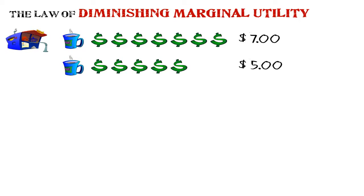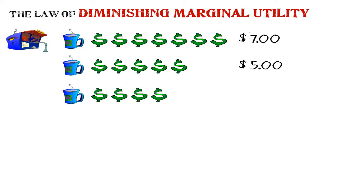As I consume more cups of coffee all at once, or one straight after the other — not over a period of days — the marginal utility or the extra satisfaction I get starts to go down. Let's say I decide to have a third one. I do quite like coffee, but still having three cups is not as enjoyable. The value starts to go down, so this one's only worth $4.